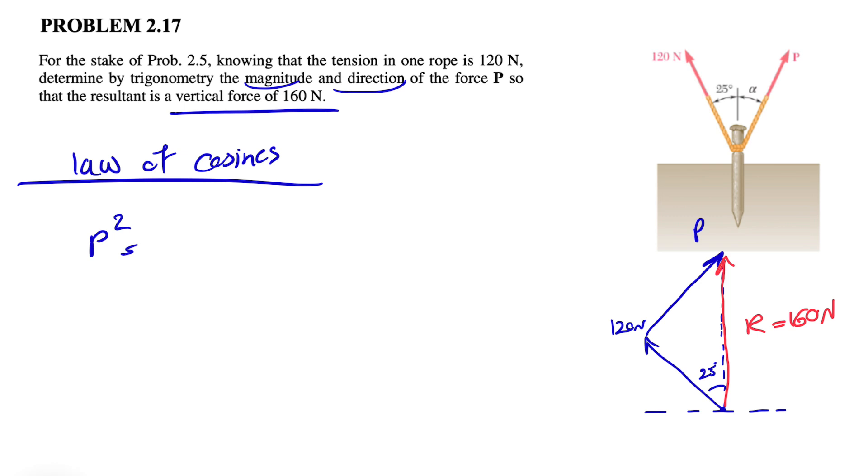we know P squared is equal to 120 squared plus R squared, which is 160 squared, minus two times 120 times 160 times the cosine of the angle right in front of this side, which is 25 degrees. So everything is known here, we should be able to find P.